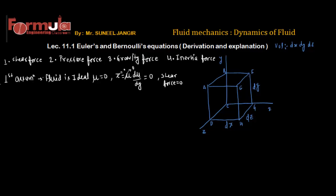According to our first assumption, for Euler's equation there is no shear force available as the fluid is ideal. When we deal with laminar or viscous flow we will include the shear force and see the Navier-Stokes equation. But for Euler's equation, shear forces are zero because the fluid is ideal.